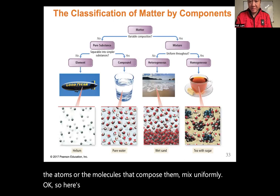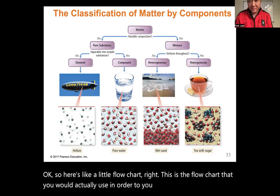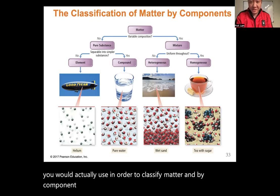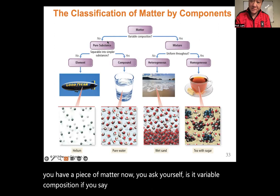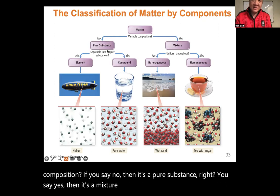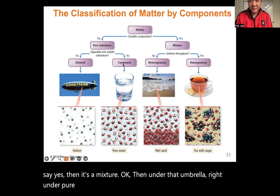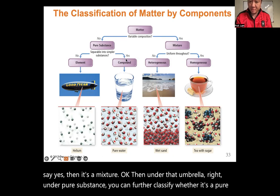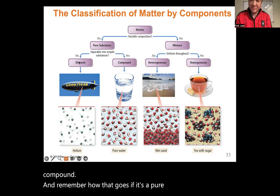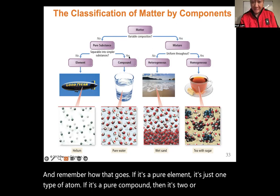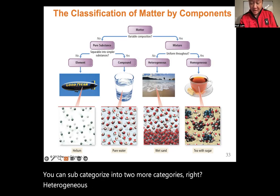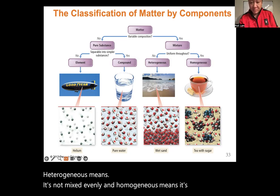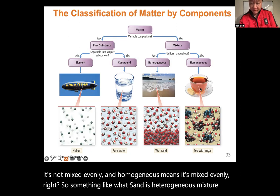Here's a flowchart to classify matter by component. First, ask: is the composition variable? If no, it's a pure substance — further classify as a pure element (one type of atom) or a pure compound (two or more atoms combined). If yes, it's a mixture — further classify as heterogeneous (not evenly mixed, like sand) or homogeneous (evenly mixed, like tea with sugar).